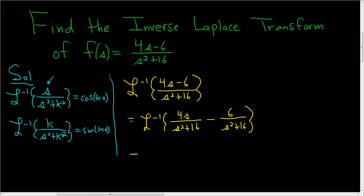And now we're going to use the fact that the inverse Laplace is linear. So I'm going to pull the 4 out here. So 4 inverse Laplace of s over s squared plus 16. And then here we can pull the 6 out. Then we have the inverse Laplace of 1 over s squared plus 16.